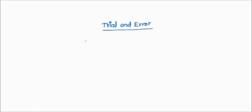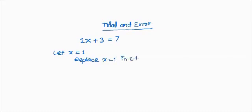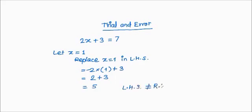Let's say we have an equation: 2x plus 3 is equal to 7. In Trial and Error, we let x equal to 1. We will solve the left hand side and right hand side separately. Replacing x equals 1 in LHS: 2 into 1 plus 3. By BODMAS, multiplication first — 2 into 1 is 2, plus 3 equals 5. LHS is not equal to RHS because RHS is 7. Therefore x equals 1 is not a solution to the equation.